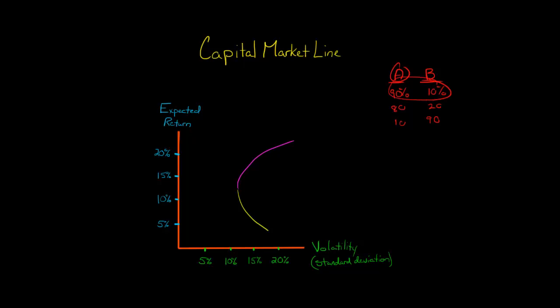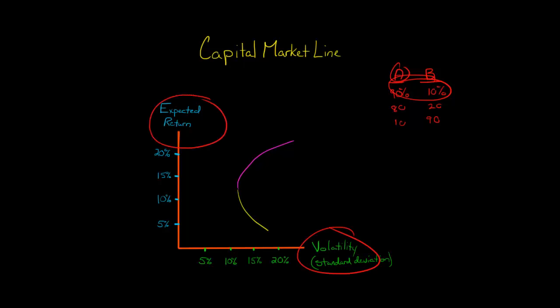Let's look at this 90-10 combination and plot the volatility of that portfolio against the expected return. We can plot different points and draw a graph showing the different volatility and expected returns for different weights of this portfolio. We can have more than two stocks, but I'm just going to keep it with two stocks to make it simple.